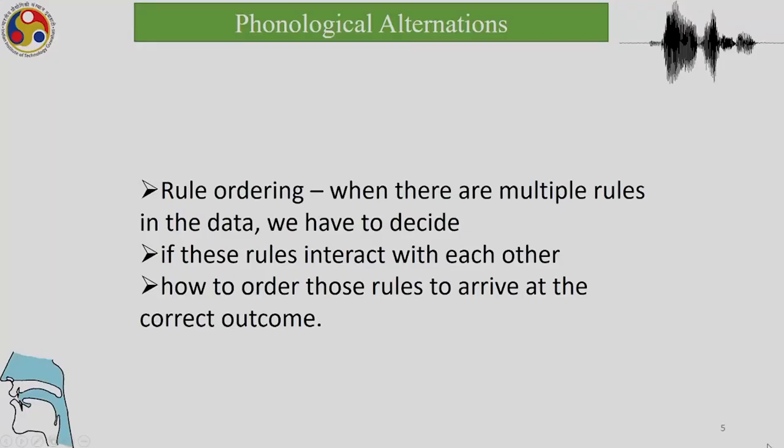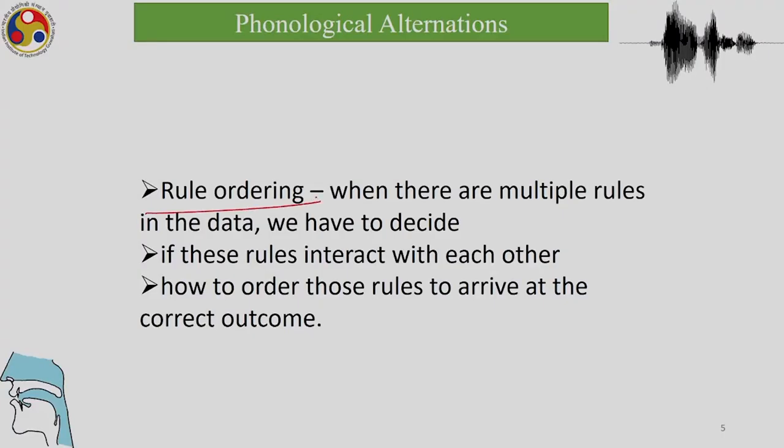When we talk about alternations — both phonological and morphophonological — something of utmost importance is rule ordering. When there are multiple rules in the data, we have to decide if these rules interact with each other and how to order those rules to arrive at the correct outcome. In a phonological analysis we not only find out rules, we also have to find out whether, to analyze a given set of data, we need more than one rule, and if so, whether those rules need ordering.